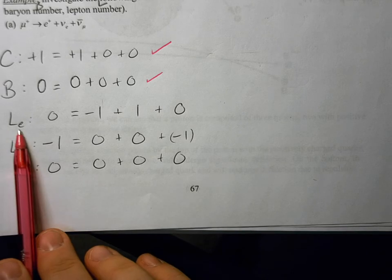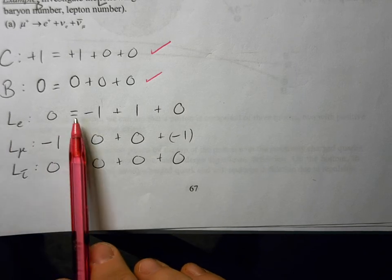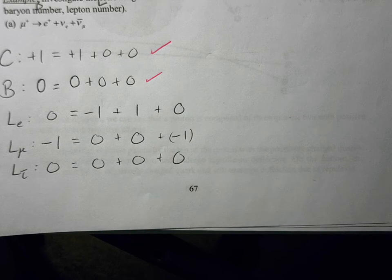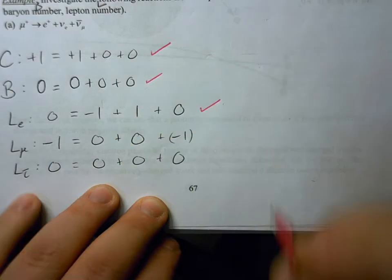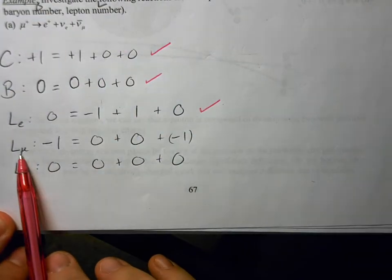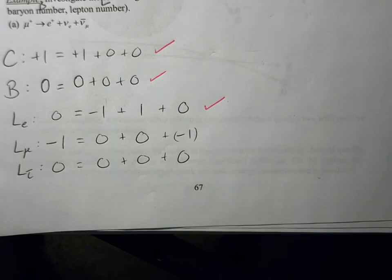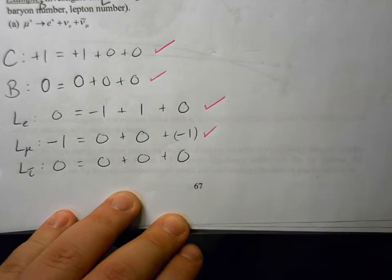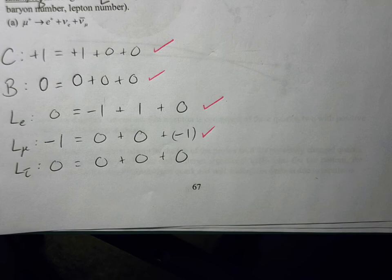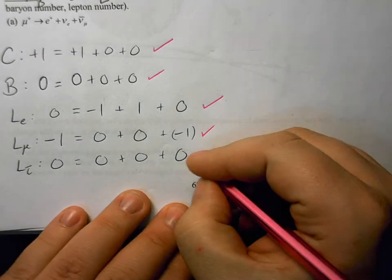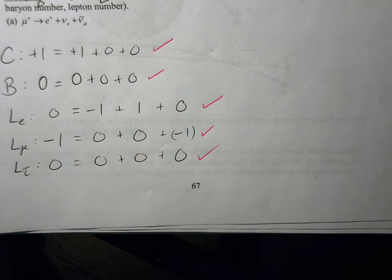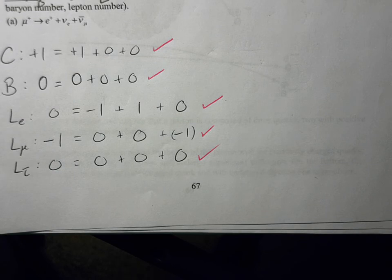Now let's check the conservation laws. Is the electron family number conserved? Does zero equal minus one plus one plus zero? Yes — zero equals zero. For the muon family: does minus one equal zero plus zero plus minus one? Yes — minus one equals minus one. And the tauon family: we have zeros across the board, zero equals zero. All conservation laws are upheld, so this reaction is permissible.